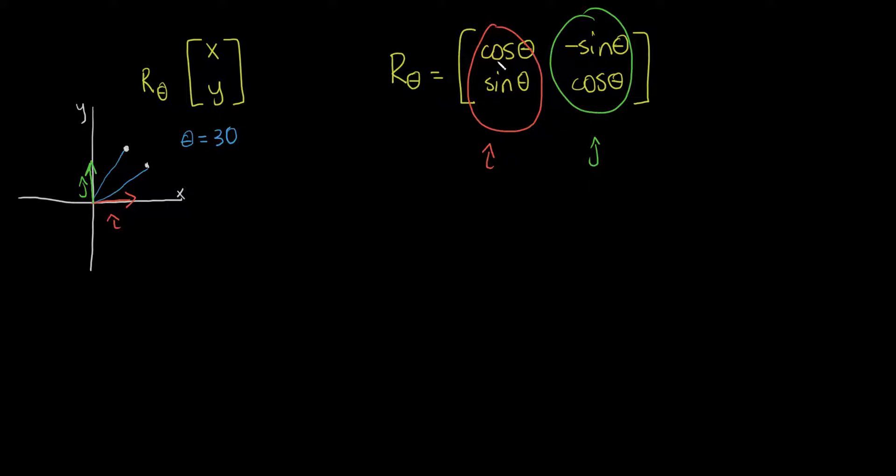Well, first and foremost, we have i hat. Cosine and sine. This pair of points, cosine and sine, describes where on a unit circle going theta degrees would take you.